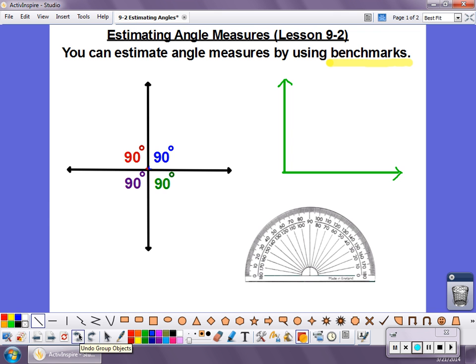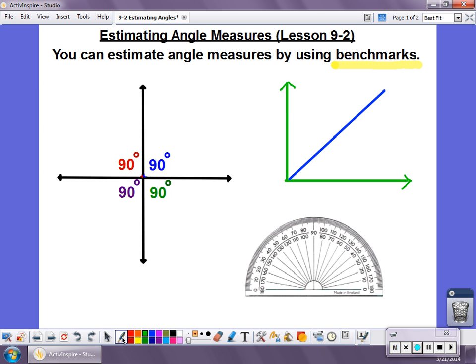Let's think about this. What if I had a ray that was right here, and the angle that I'm looking at is this section right here? If I know that this green angle on the outside is 90 degrees, and I'm looking at just this section, I might think that's about half. So if I were going to make an estimate, I might estimate that this section here is about 45 degrees.